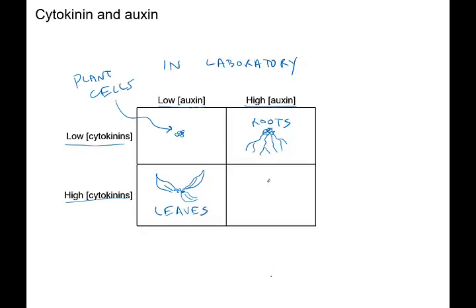Now what happens if you mix them both together—high auxin and high cytokinin? Well, what you get is a lump of plant tissue called a callus. What this callus basically is, is a bunch of undifferentiated cells. You get a lot of cell division, mitosis is happening, but those cells aren't developing into any particular type of tissue. You just get this lump.